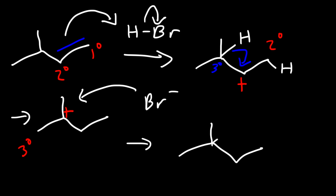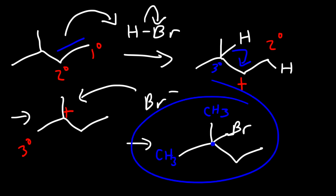And so this is going to be the product. We're not going to get a racemic mixture because this carbon is not chiral — we have two methyl groups attached to it. So we only get one major product for this reaction.